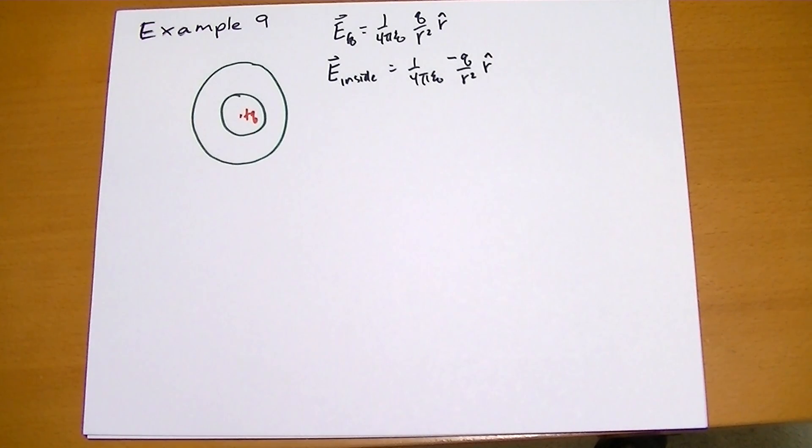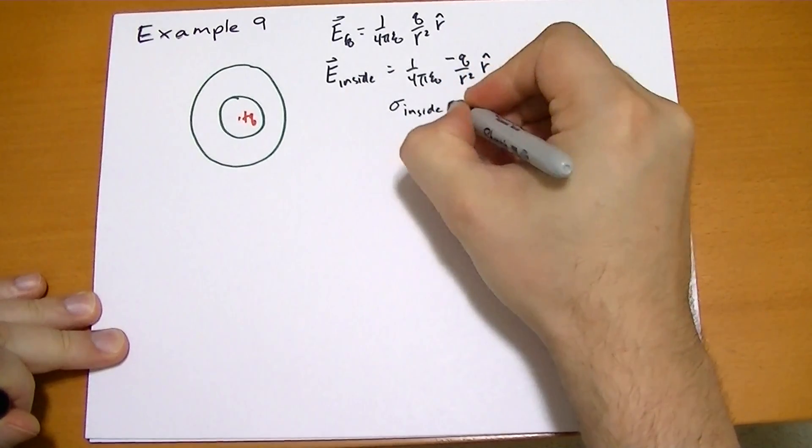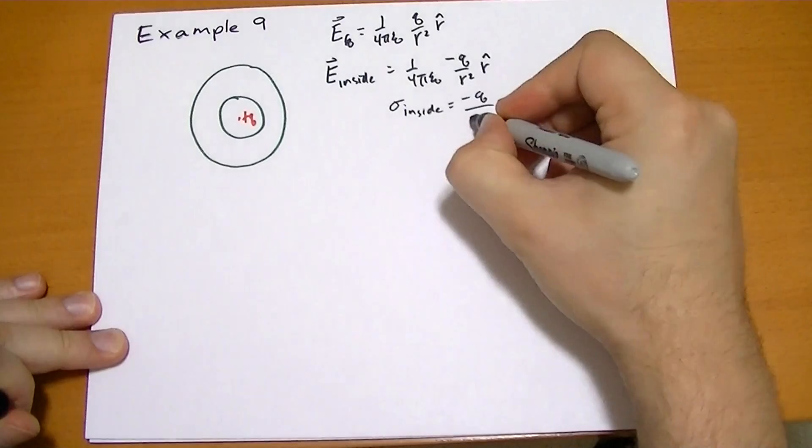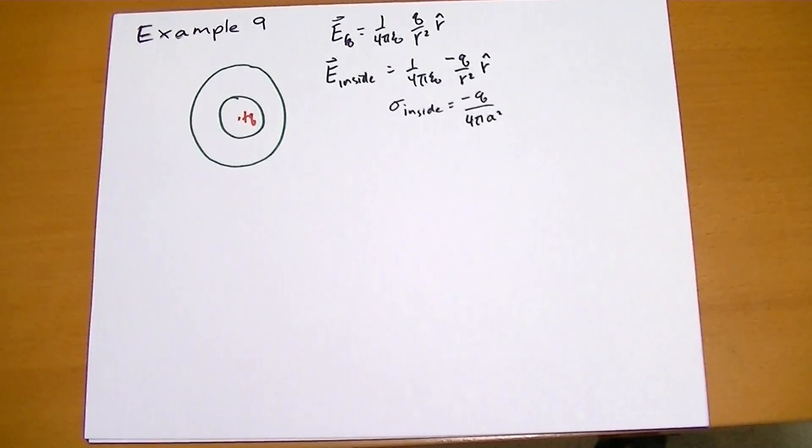And dividing by the surface area there, we're going to get a sigma. So sigma inside is equal to minus Q over 4 pi A squared.